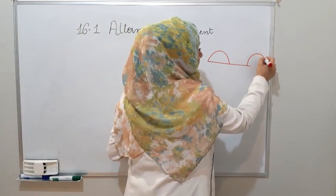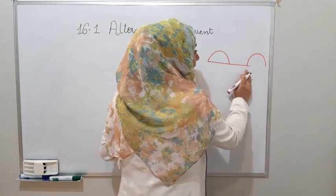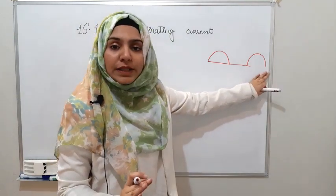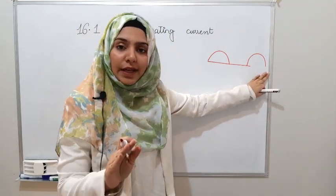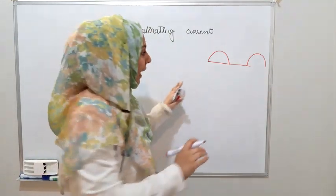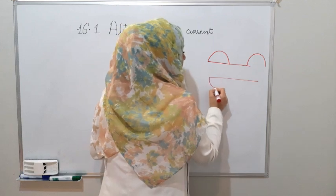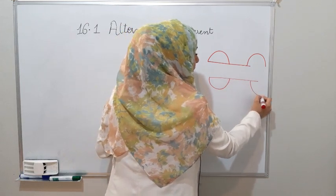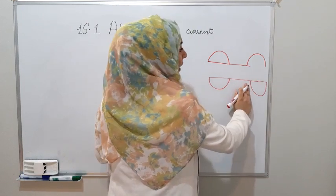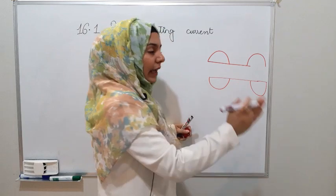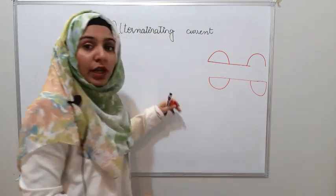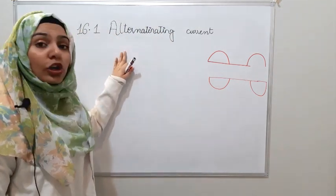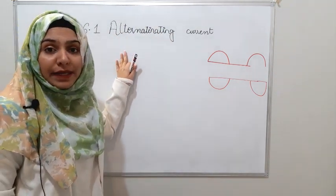If you look at the negative portion, you will not see any changes. The current flows in the same direction — only downward. So this pattern represents direct current. But what is alternating current?